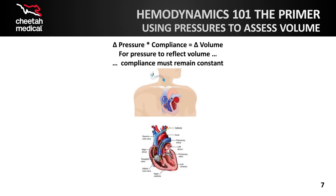Let's spend a little time on CVP and pressure measures, as many clinicians still like to include them in care. Measuring pressure is relatively easy, and is what we've used for years to assess volume, in the form of central venous pressure or pulmonary capillary wedge pressure. However, when measuring pressure and making inferences about preload or volume, it is important to understand the relationship between pressure and volume. Pressure times compliance equals volume. For changes in pressure, CVP, to reflect changes in RV volume or preload, compliance must remain constant or unchanged. This is a key point.